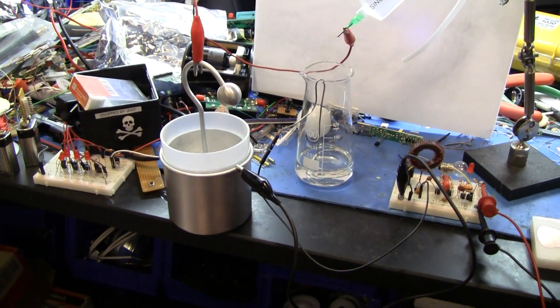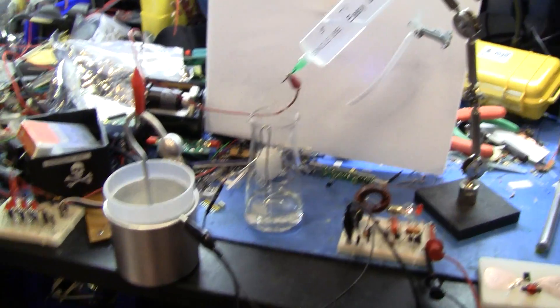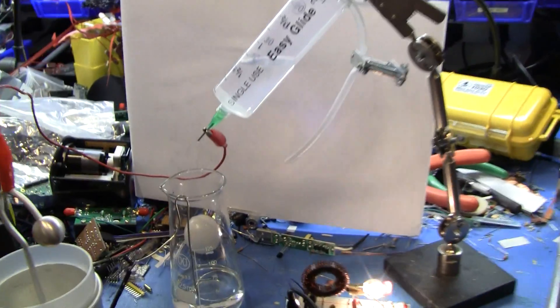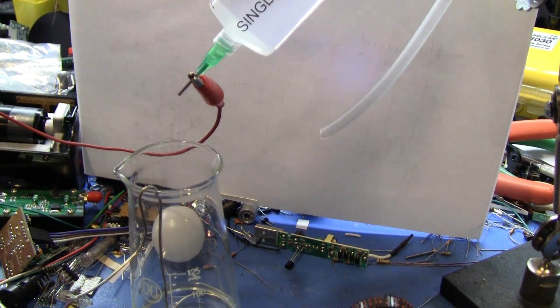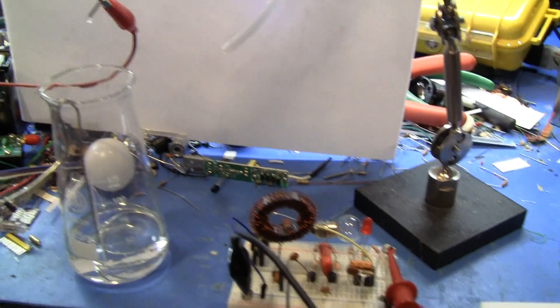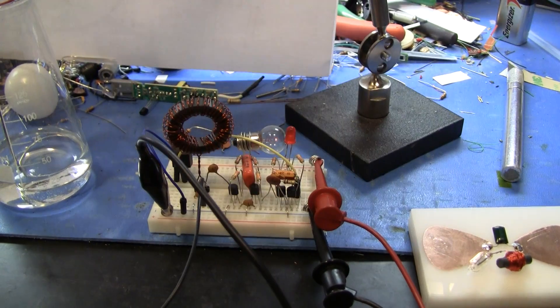And over here we have a Leyden jar charged up to a few kilovolts and a dripper system. So here you can see individual drops of water, each one carries a little bit of charge out of the Leyden jar and dumps it into the tank circuit in the front end of this event detector.